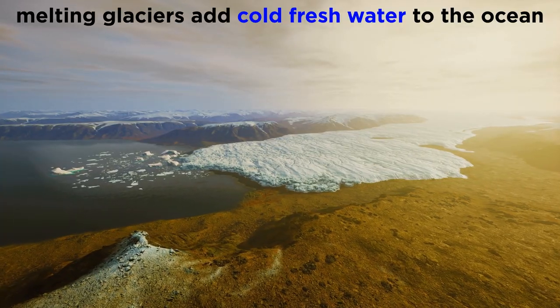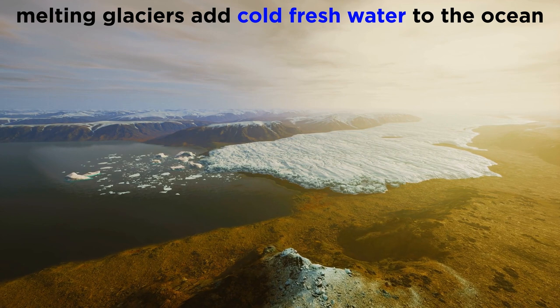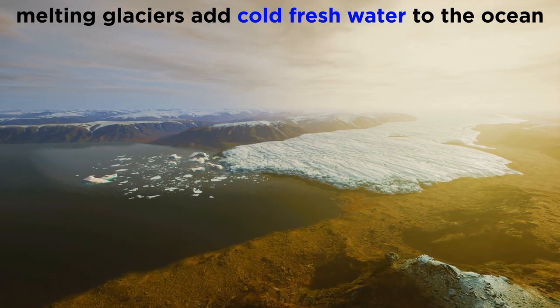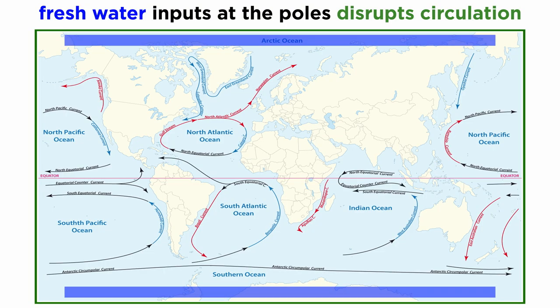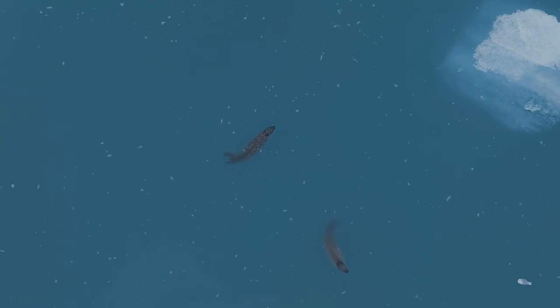As climate change is causing a lot of glaciers and ice sheets to melt, cold fresh water is being increasingly pumped into the ocean system. Since this new water is fresh, it is less dense than ocean water. Thus in crucial places where water should be sinking and driving circulation, like near the poles, freshwater inputs are weakening the circulation instead. This will have global impacts and disrupt sensitive ocean ecosystems.